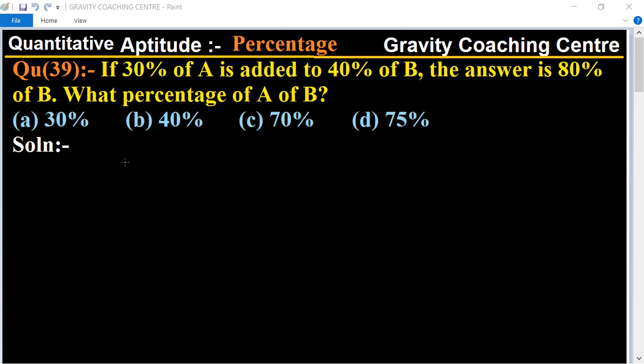...80% of B. So what percent of A is B? In this question, it is given that 30% of A is added to 40% of B. According to the question, 40% of B added with 30% of A...